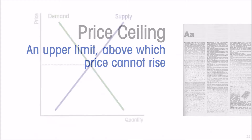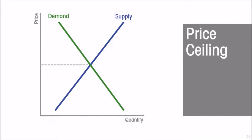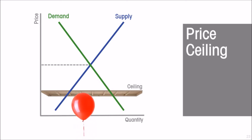Here's our market model — demand curve, supply curve, equilibrium price. A price ceiling prevents the price from rising to what would be the equilibrium. It's an upper limit, so price can rise up to that level but not above it. Since a binding price ceiling has to be below where the price would otherwise have gone — the equilibrium price.